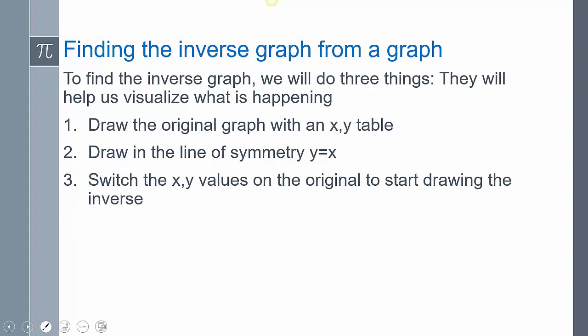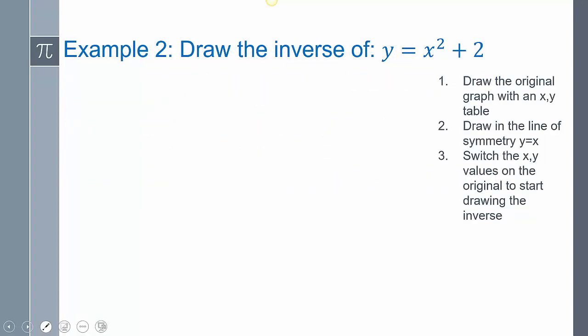Now, for us to find that inverse graph, I mean, obviously, you could find the inverse algebraically, plug that function in, that's fine. But what if I wanted to find that inverse graph from just an already given graph? You would draw the original graph, and you would use an x, y table to help you. We plug in values for x, and we get our y's. It helps us to draw in that line of symmetry, y equals x. And then we're going to switch the x and y values to start drawing our inverse.